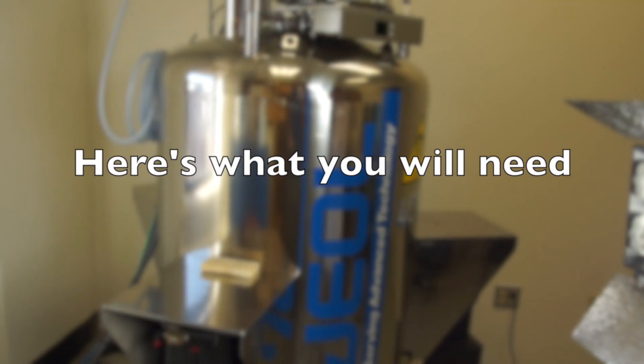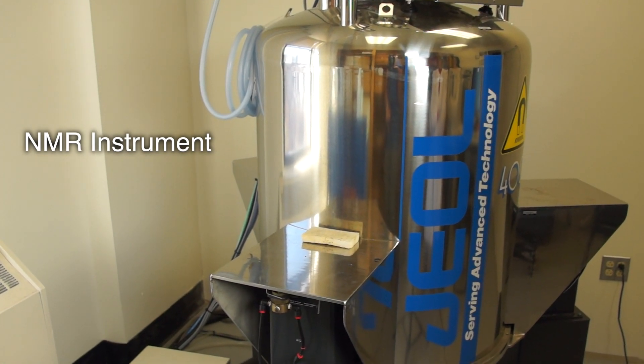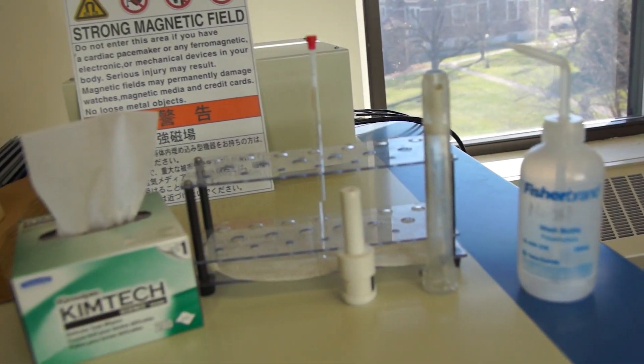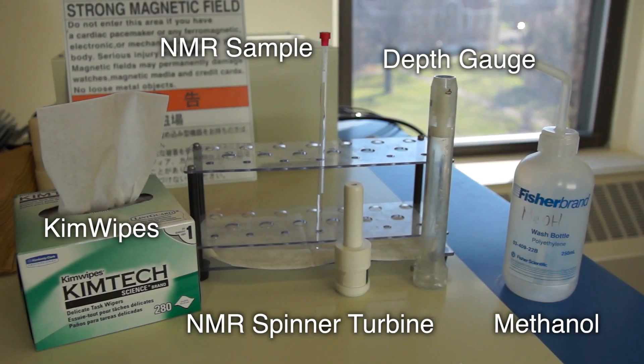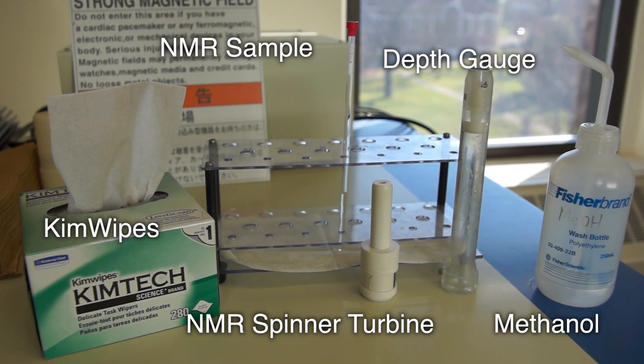To load an NMR sample, here's what you'll need. The NMR instrument, as well as your NMR sample, depth gauge, some kim wipes, an NMR spinner turbine, and some methanol.